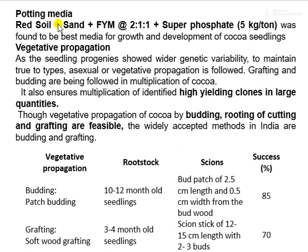In vegetative propagation, budding and grafting methods are preferred in India. For budding, patch budding is used with 10 to 12 month old seedling rootstock. Scion bud patches of 2.5 cm length and 1.5 cm in width are taken from the bud, and the success percentage is 85%. For grafting, softwood grafting is mostly preferred. Three to 4 month old seedlings are selected as rootstock. A scion stick of 12 to 15 cm length with 2 to 3 buds is used, and the success percentage is 70%.